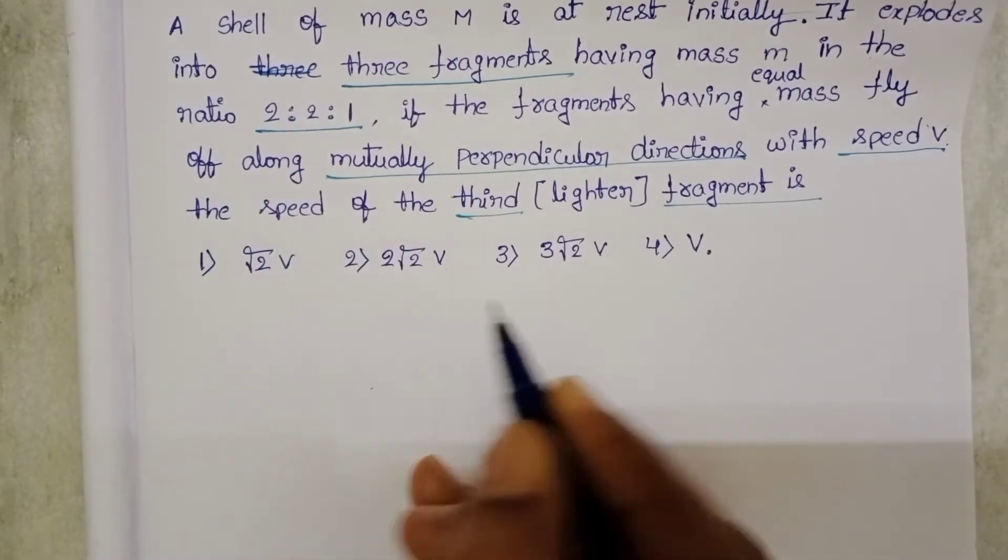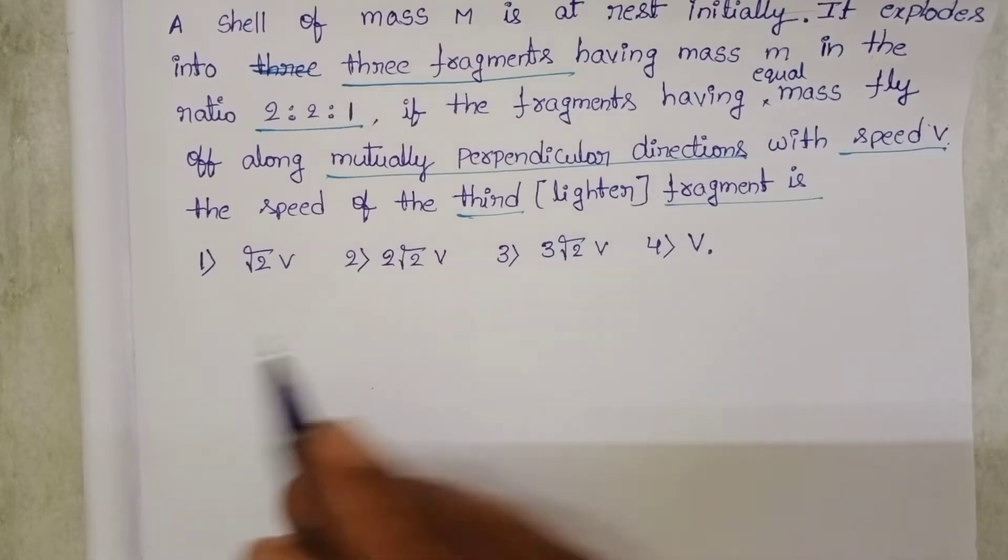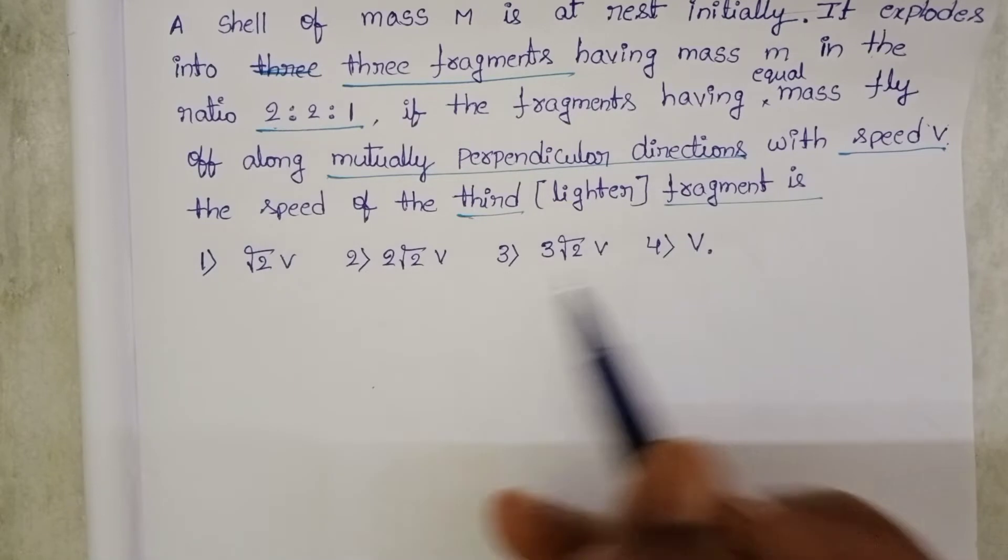Initially, shell is at rest position. So initial momentum is equals to 0 and after then it explodes into 3 parts in the ratio 2 is to 2 is to 1.